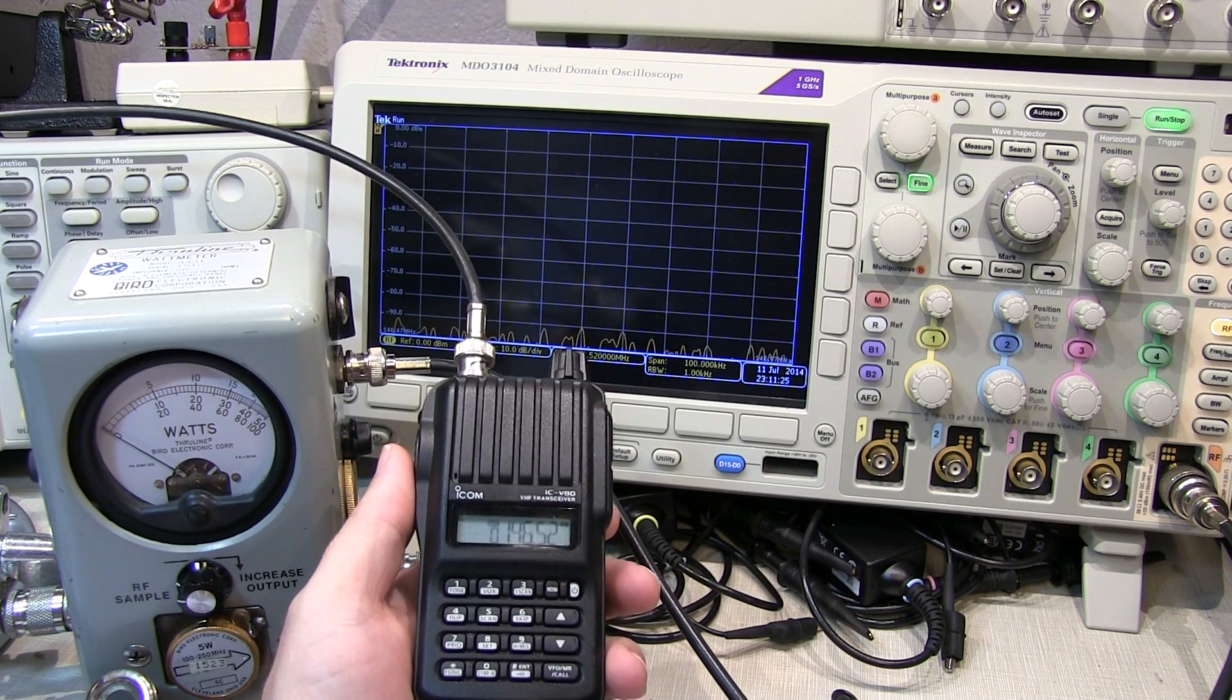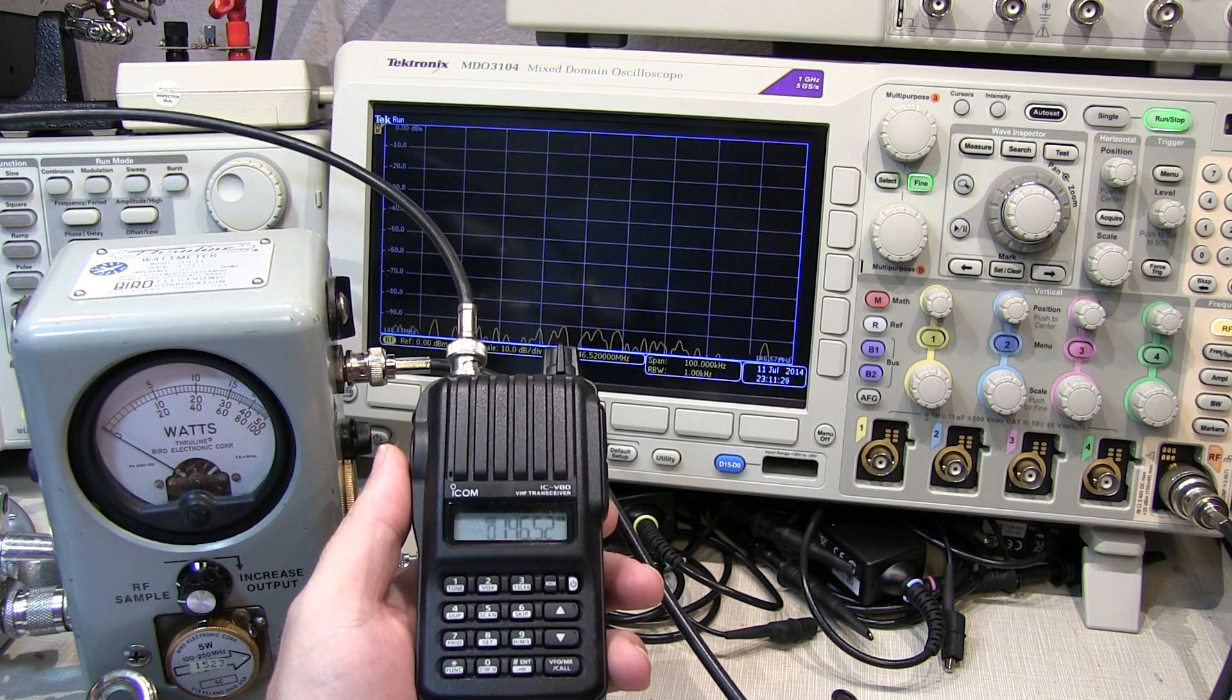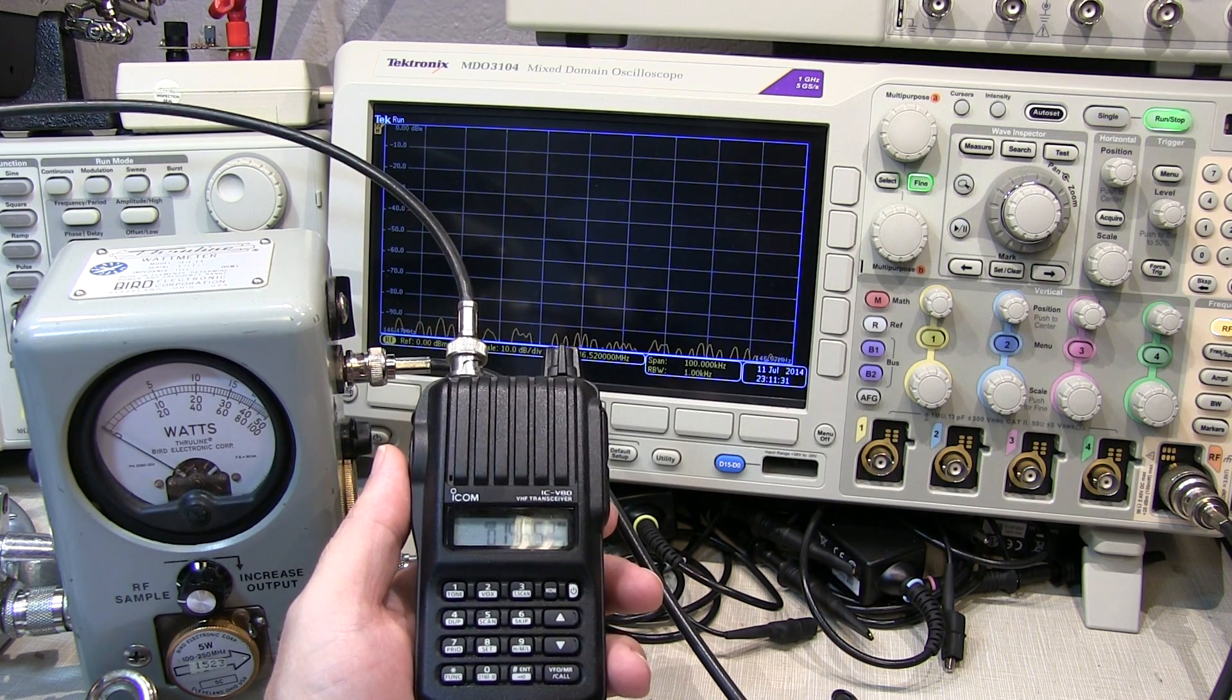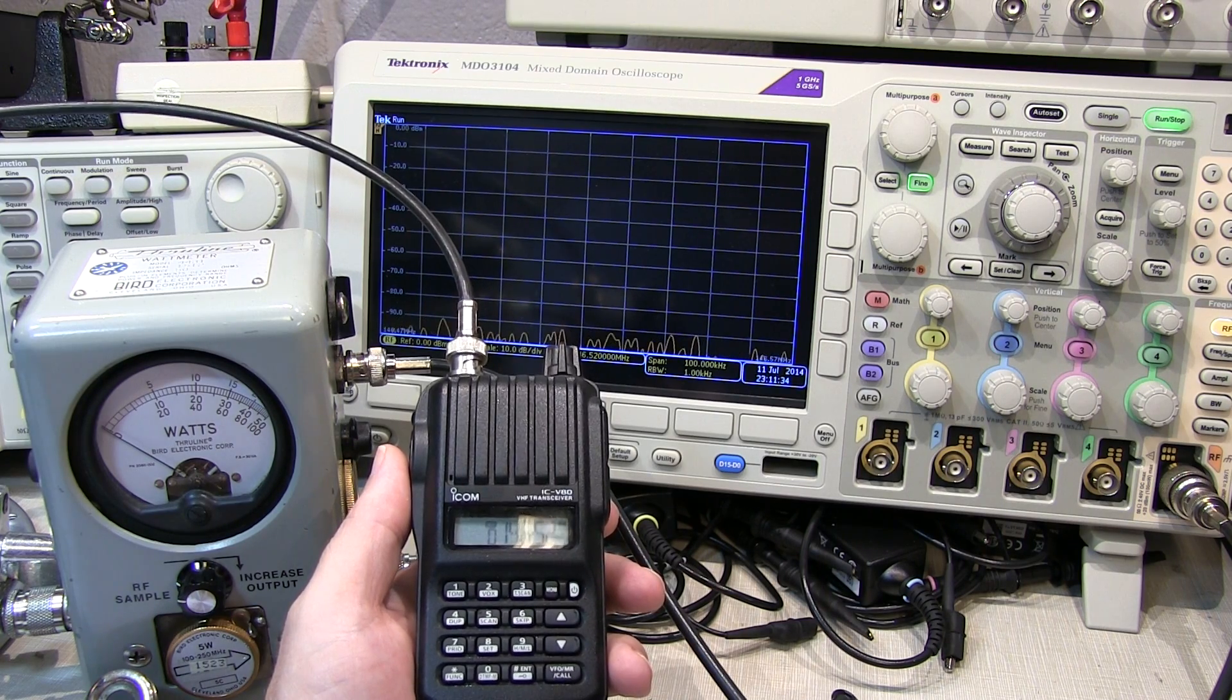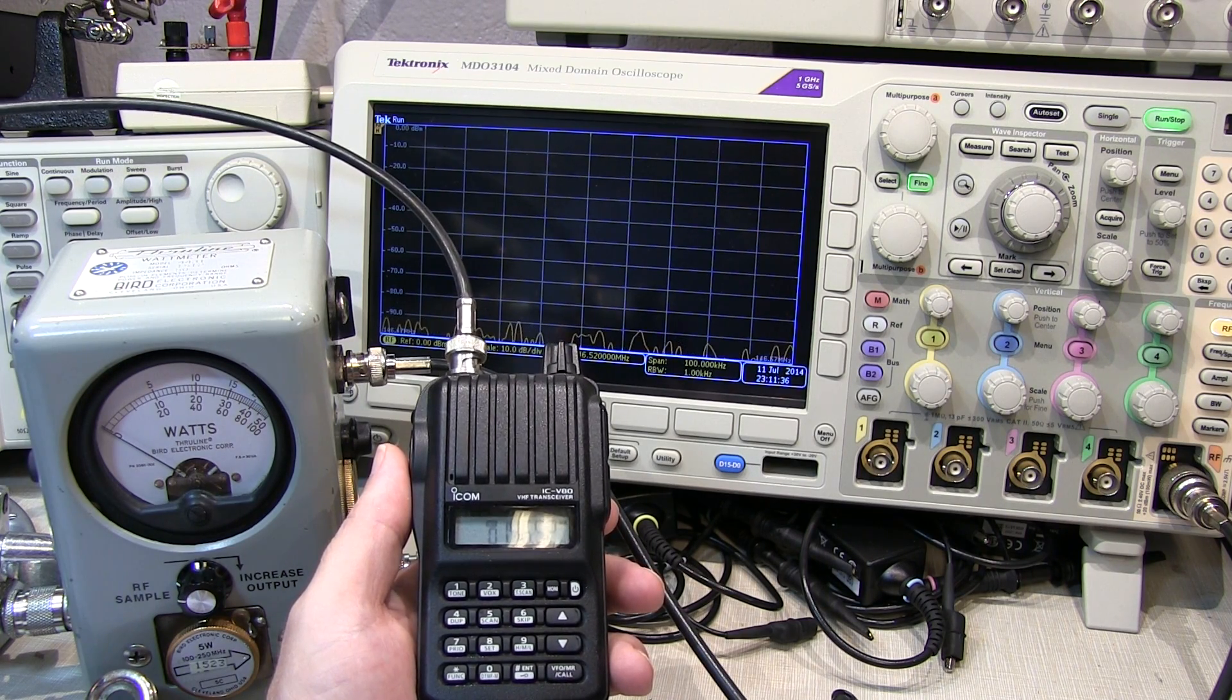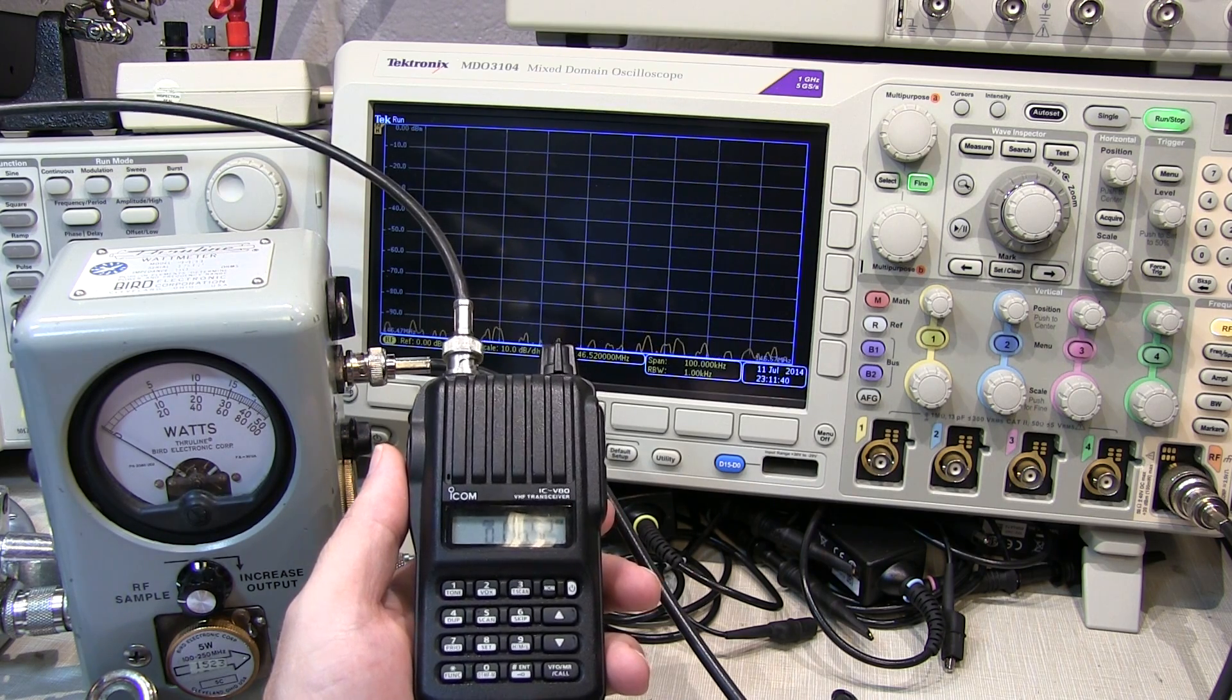Several months ago we made a video showing how to measure FM deviation accurately using the Bessel null method. I'll put a link to that video in the description below. Today's short video will show how to get a good estimate of deviation simply using a spectrum analyzer.